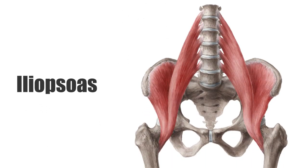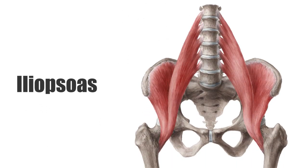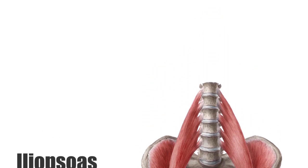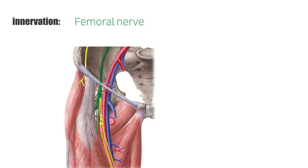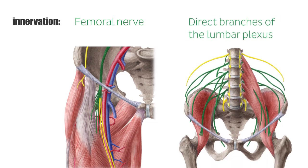The iliopsoas muscle belongs to the inner hip muscles. It consists of a complex of two muscles with different areas of origin. The iliopsoas belongs to the striated musculature, and the innervation is carried by the femoral nerve as well as the direct branches of the lumbar plexus, both seen highlighted in green on these images.